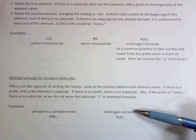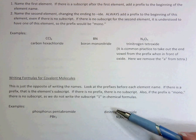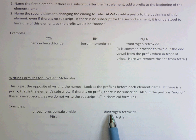Here's dinitrogen tetraoxide. So dinitrogen, di meaning two, and nitrogen being the symbol N. So N2.